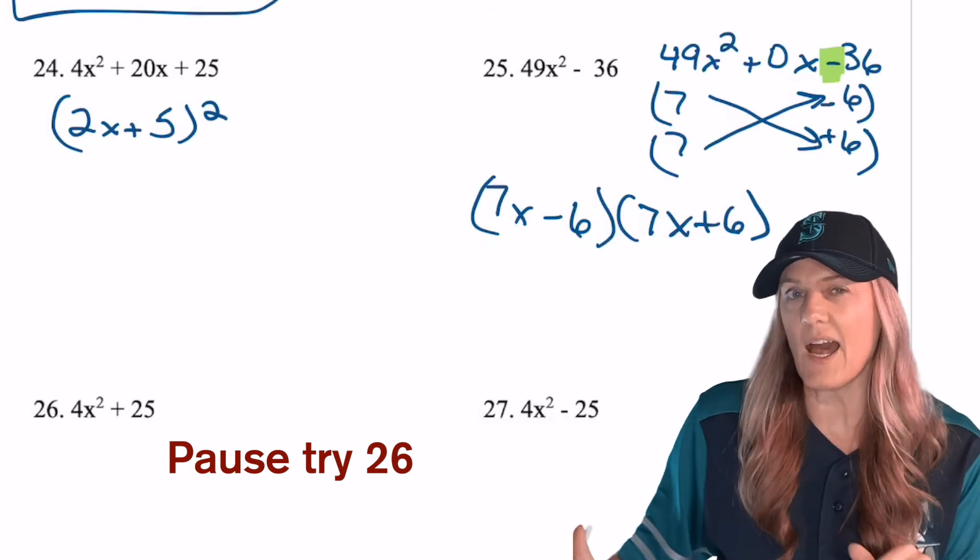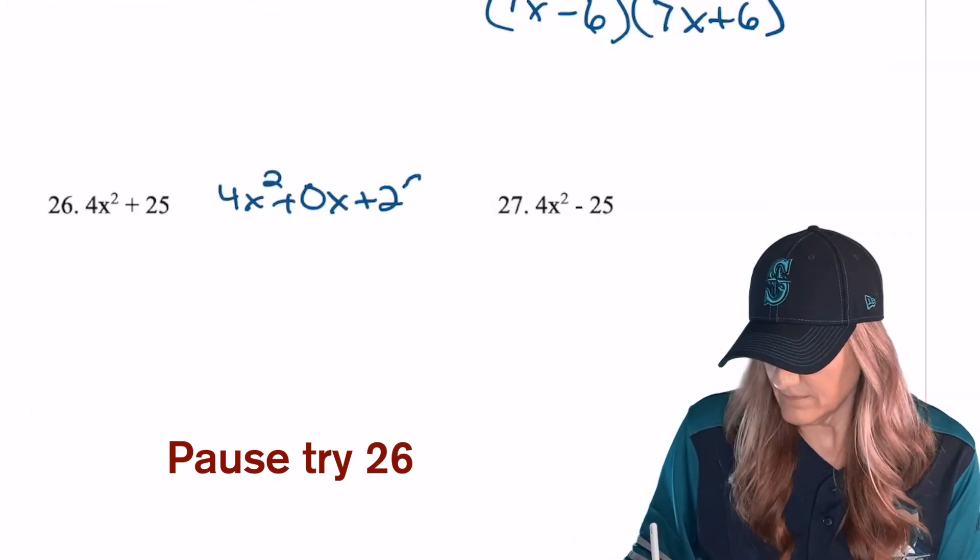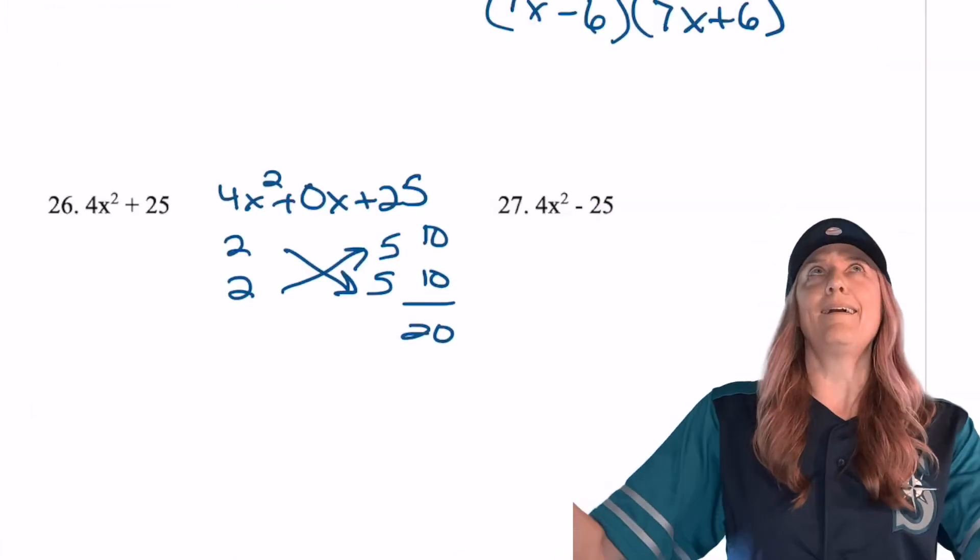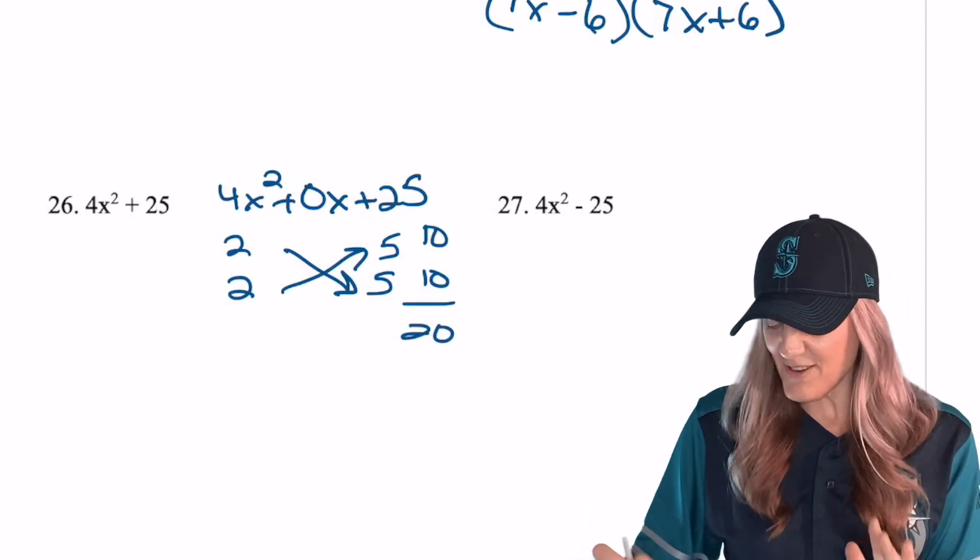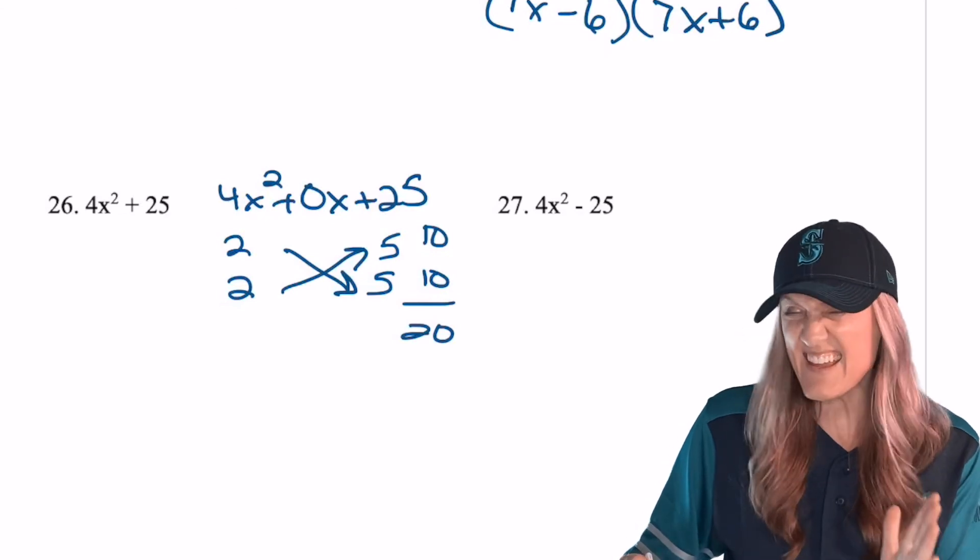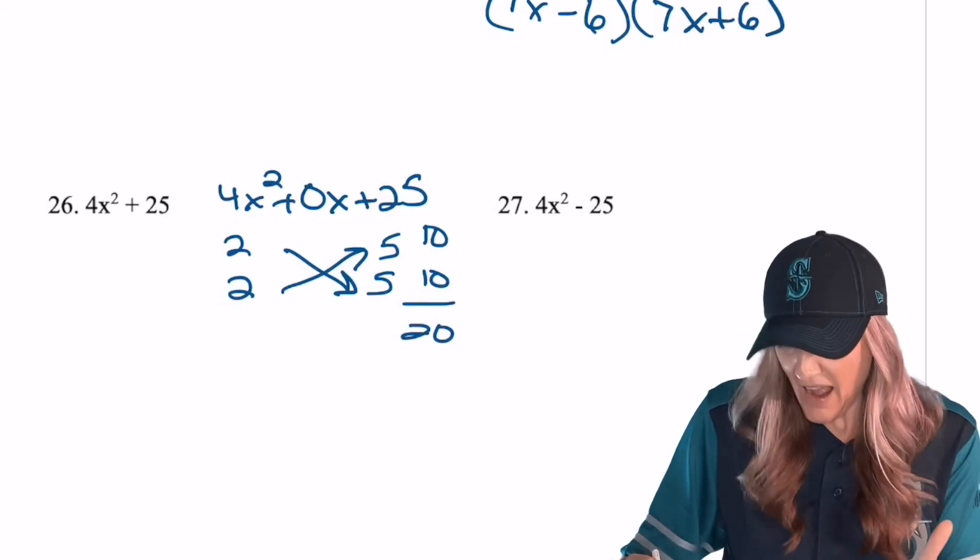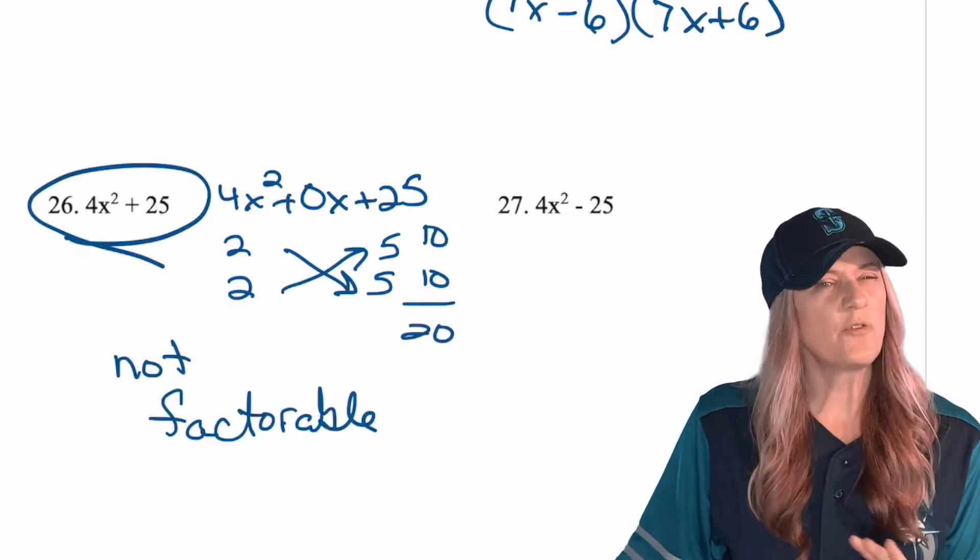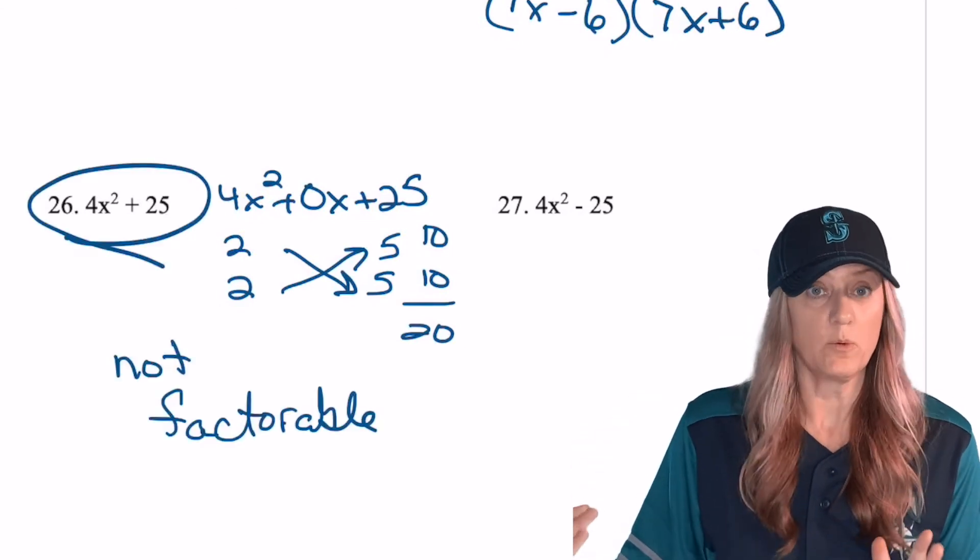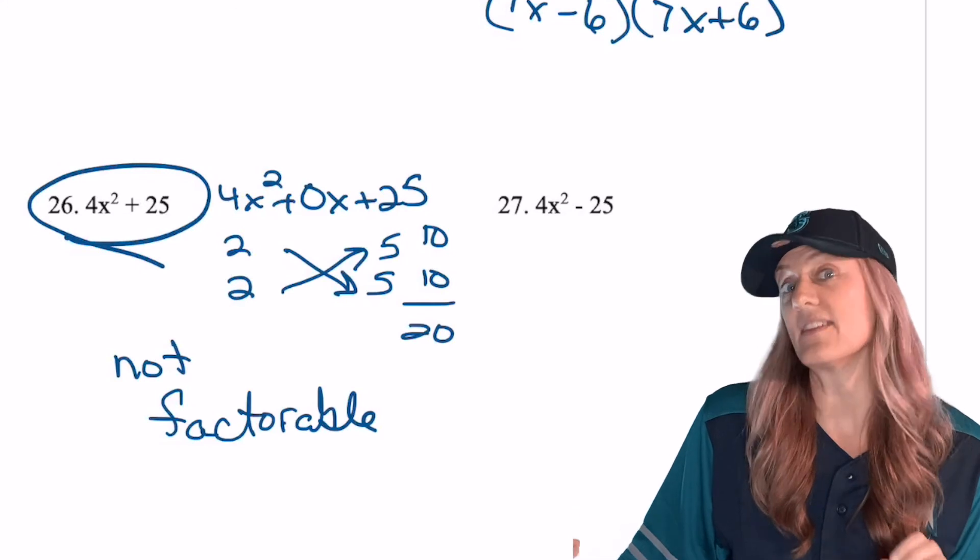What about 26? Do you got it? Give it a shot. Did I catch it? You can't do this one. There's no way to get a 0 in the middle when c is positive, right? I checked it. 10 and 10, that's 20. They're both pluses. So for now, we just say not factorable. We can't go any further than that at this moment.